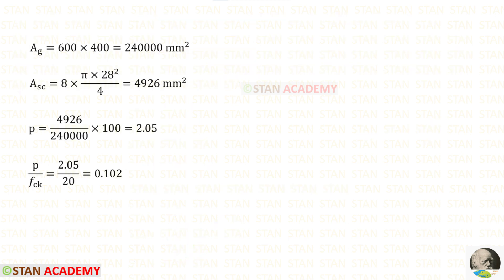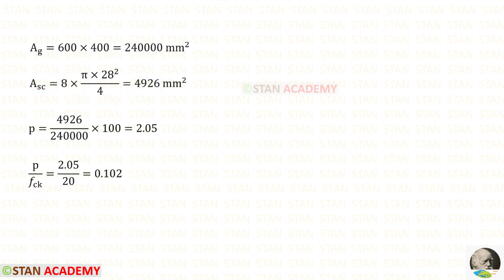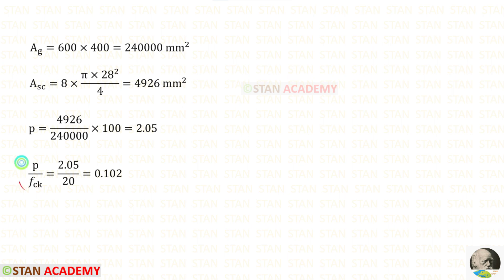Now let us find the gross area: 600 × 400 gives us AG. Then let us find the area of steel — when we calculate this, we will get ASC. Then we have to find the percentage P = (ASC / AG) × 100, which gives P = 2.05. Let us find P / FCK: 2.05 / 20 = 0.102.